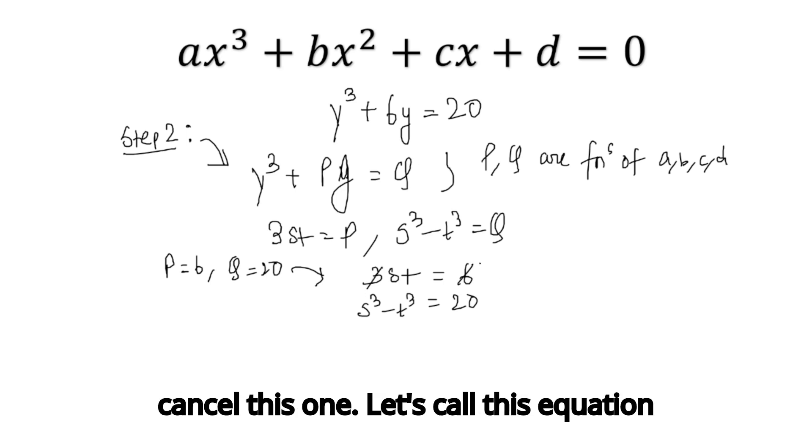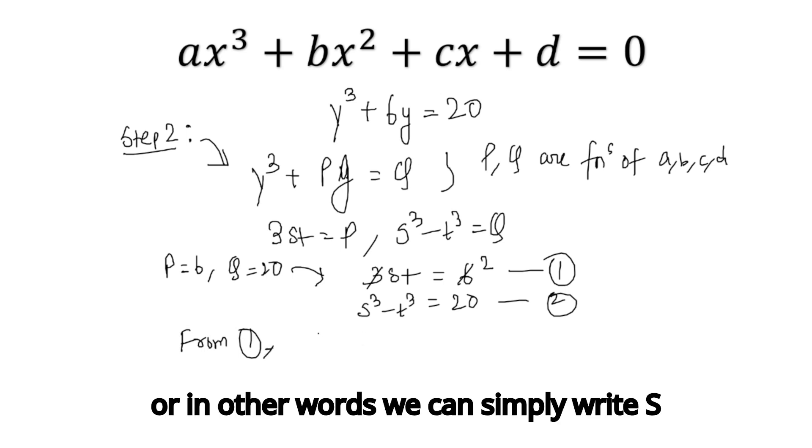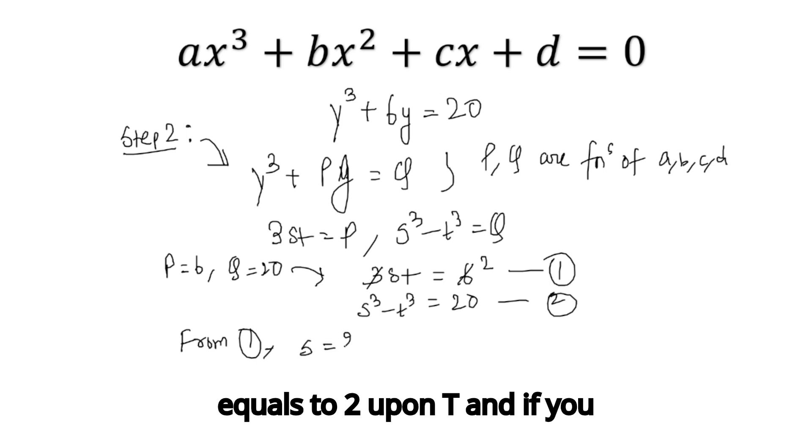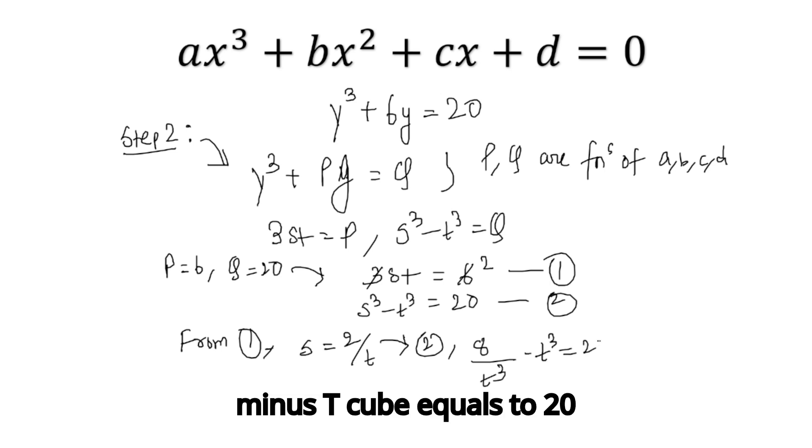From equation 1, we get st = 2, or s = 2/t. If you put this value in equation 2, you get 8/t³ - t³ = 20. If you multiply by t³ everywhere and rearrange, you get a quadratic in t³, which is t⁶ + 20t³ - 8 = 0.